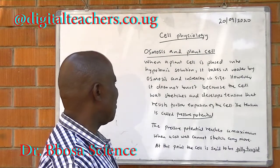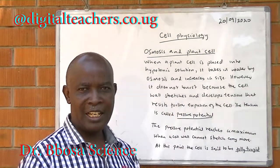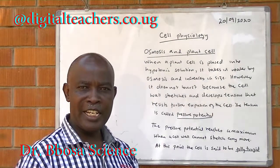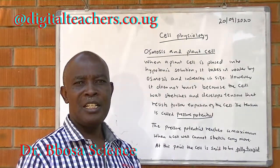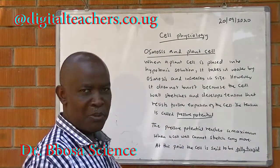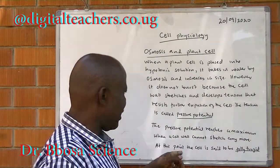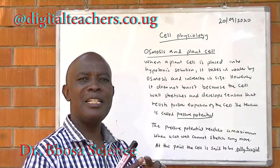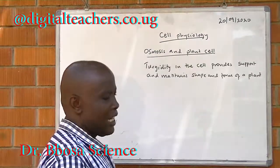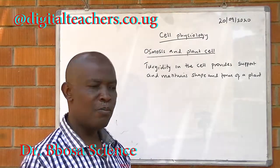Osmosis and plant cells. When a plant cell is placed in a hypotonic solution, it takes in water by osmosis and increases in size. However, it does not burst like a red blood cell because it has a cell wall which stretches and develops a tension, preventing further expansion. The tension developed by the cell wall is called the pressure potential. The pressure potential reaches its maximum when the cell wall cannot expand anymore, at which point the cell is said to be fully turgid. Turgidity provides support and maintains the shape and form of the plant.